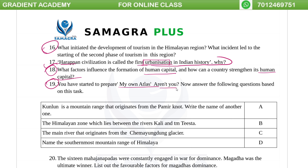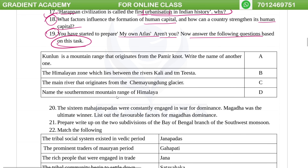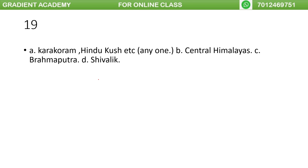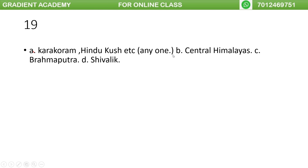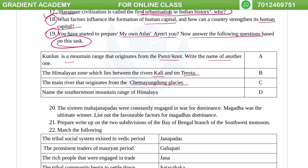The Karakoram is a mountain range that originated from the Pamir. The Himalayan zone lies between the Kali and Tista rivers. The main river that originated from the Chemeyang glacier is the Brahmaputra. The southernmost range of the Himalayas is the Shiwalik.